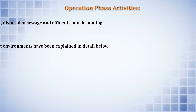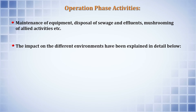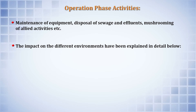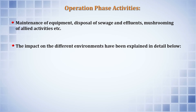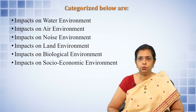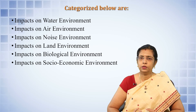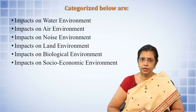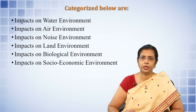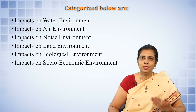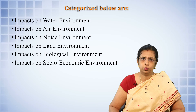Operation phase activities include maintenance of equipment, disposal of sewage and effluents, mushrooming of allied activities, and impacts on different environments. These impacts can be categorized as: impacts on the water environment, air environment, noise environment, land environment, biological environment, and socio-economic environment — all of which need to be written down in the project proposal.